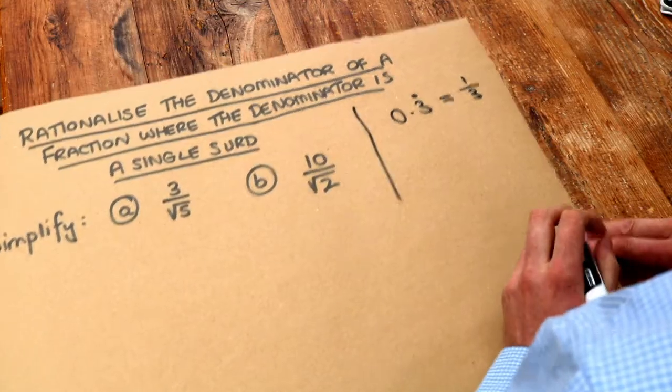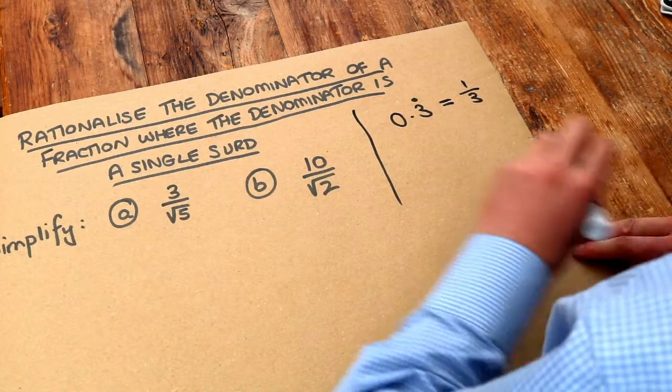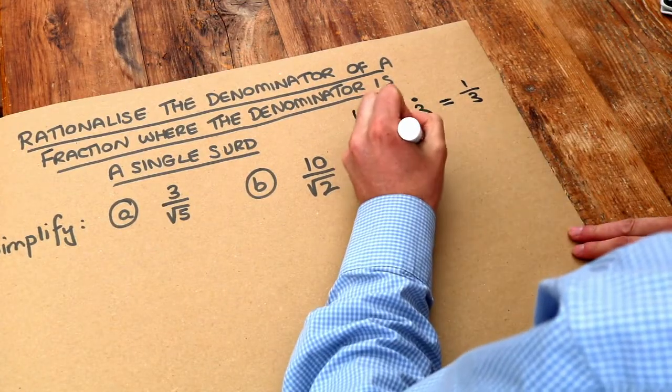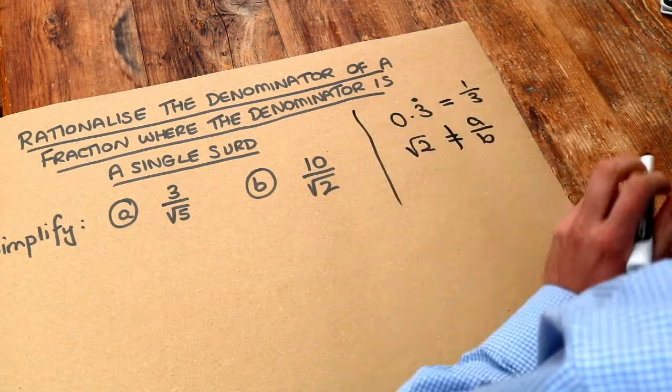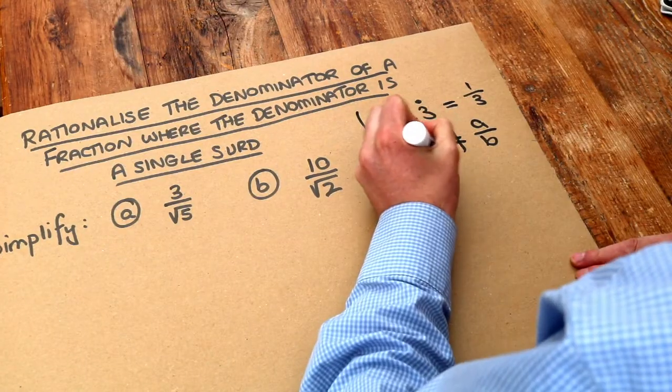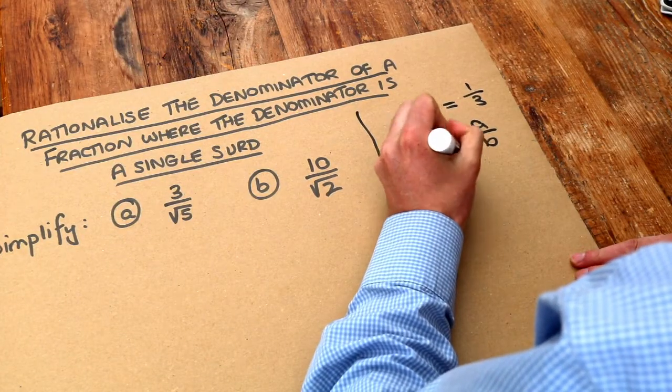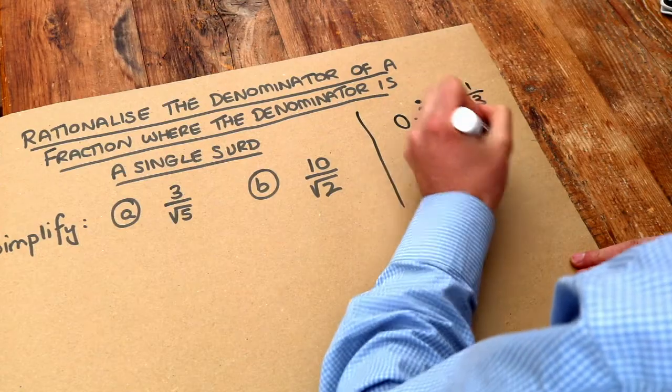But surds are not rational because they cannot be expressed as a fraction. So root 2, for example, cannot be expressed as something over something where these are both whole numbers. So root 2 is known as irrational because it can't be expressed as a fraction.